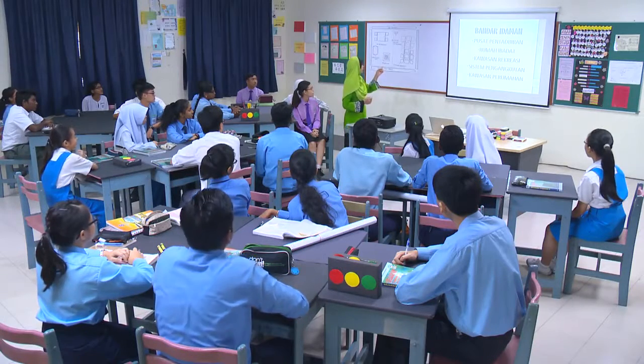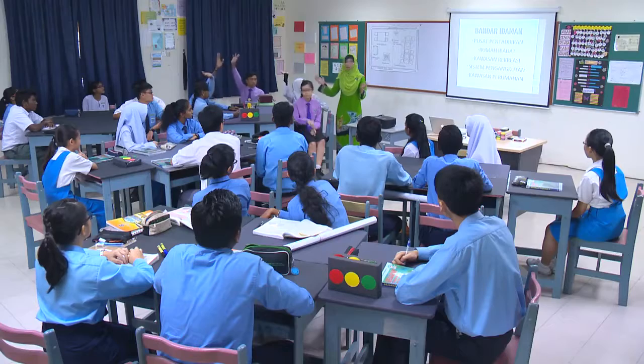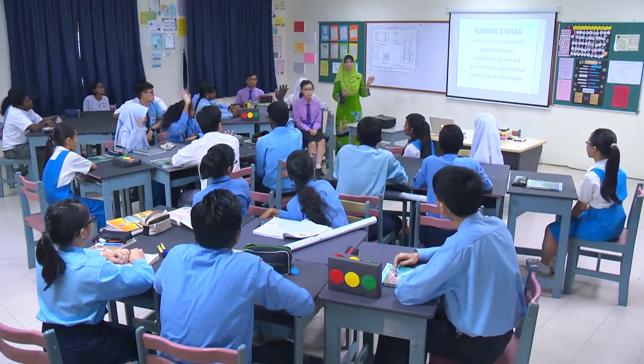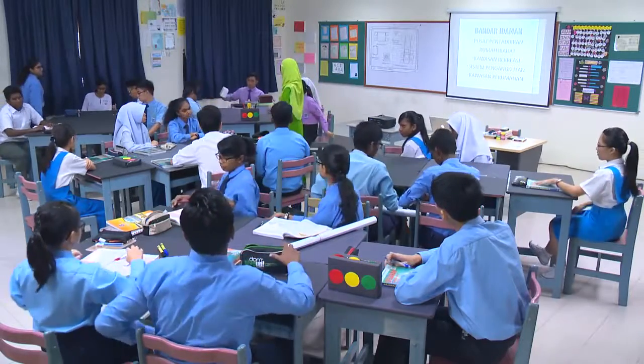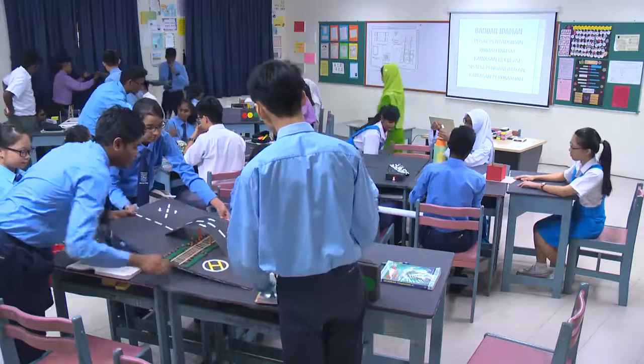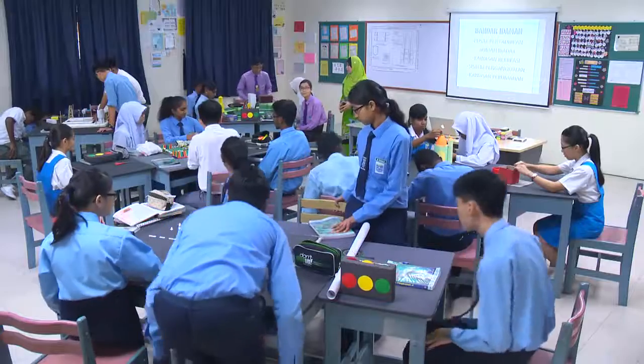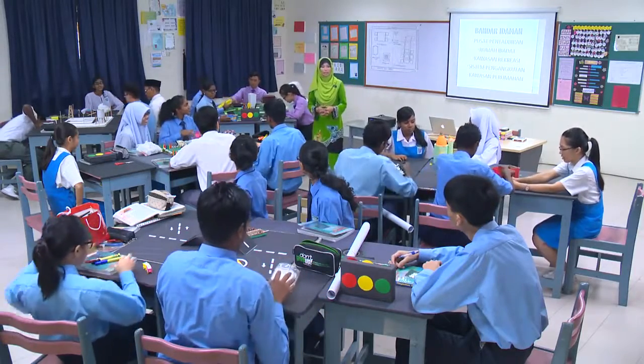Untuk aktiviti yang seterusnya, Cikgu nak minta kamu hasilkan bandar idaman. Ingat lagi tak aktiviti yang kita buat tapak masa minggu lepas? Ciri-ciri ni Cikgu dah bagikan: kumpulan satu dapat ciri pusat pentadbiran, rumah ibadat untuk kumpulan dua, kawasan rekreasi untuk kumpulan tiga, sistem pengangkutan kumpulan empat, dan kawasan perumahan kumpulan lima. Jadi hari ni, kamu bawa tak barang-barang yang Cikgu minta? Bahan terbuang atau bahan sampingan. Cikgu benarkan kamu keluarkan bahan tadi dan ambil tapak model yang kita dah bina masa minggu lepas. Cikgu berikan kamu masa lima belas minit untuk teruskan bandar yang ingin kamu hasilkan, dan selepas tu beberapa kumpulan diminta datang ke hadapan untuk terangkan ciptaan bandar masing-masing.